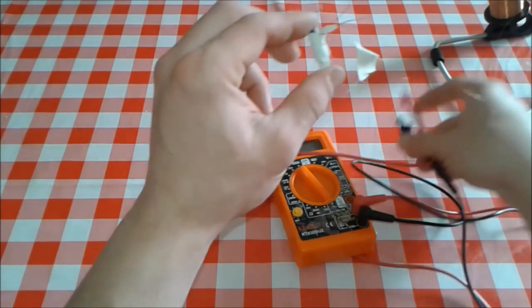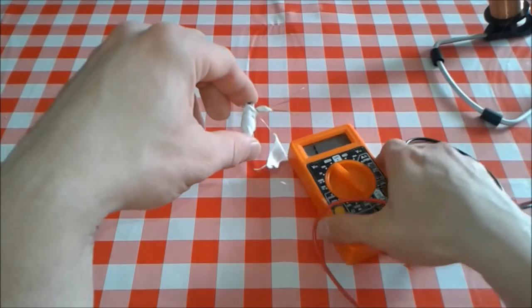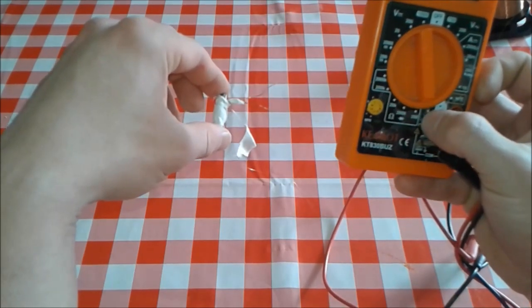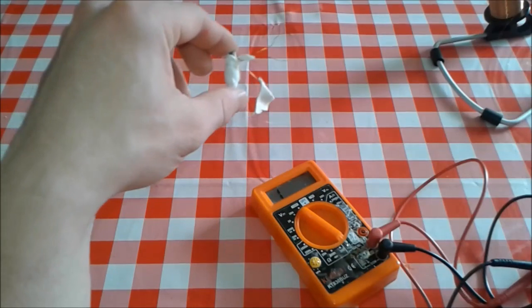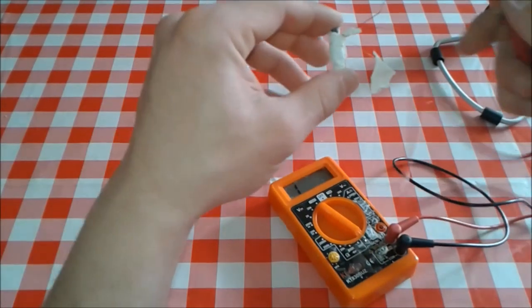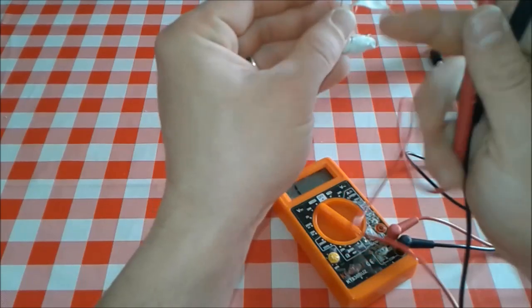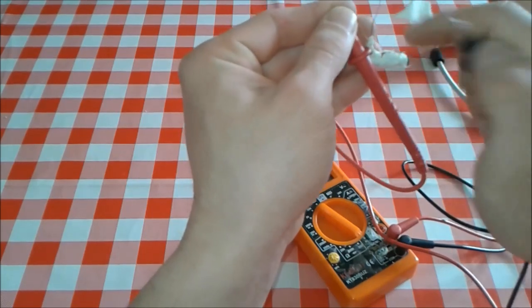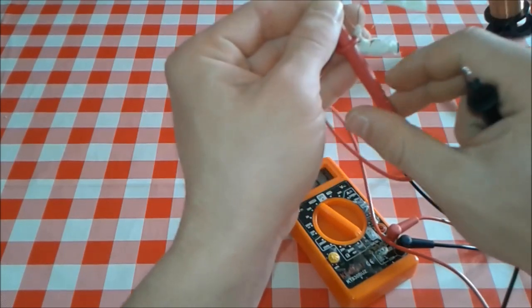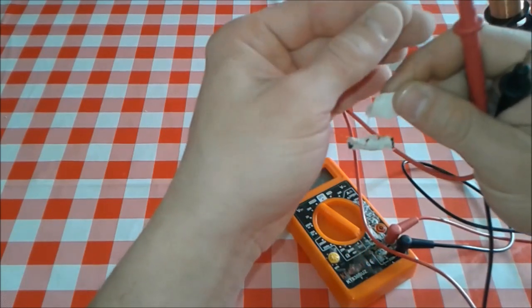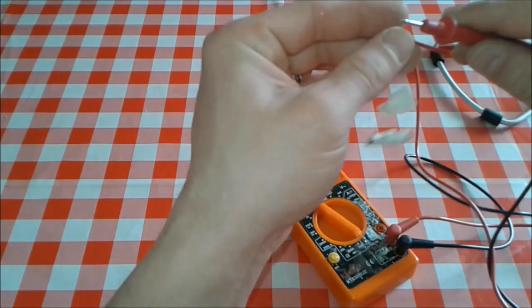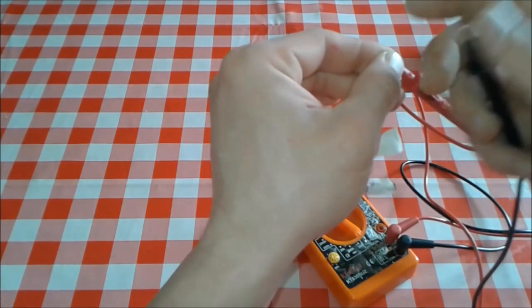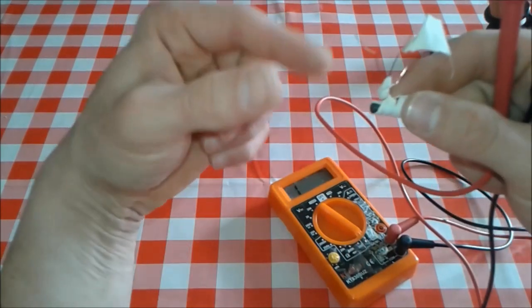We're back folks. Now we're gonna test for continuity. We're gonna set the multimeter here in this range. It has a speaker, kind of a draw and some lines. And we're gonna check the primary which is this thicker wire. Can you hear it? It's got continuity so it's alright. And now these thin wires. Yep. So the transformer is good from this point of view.